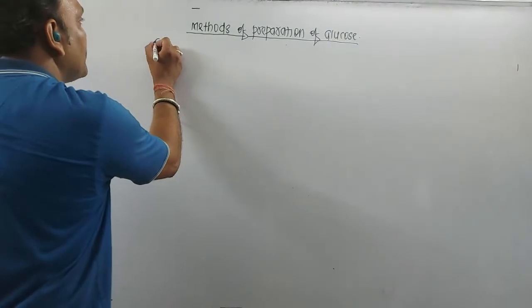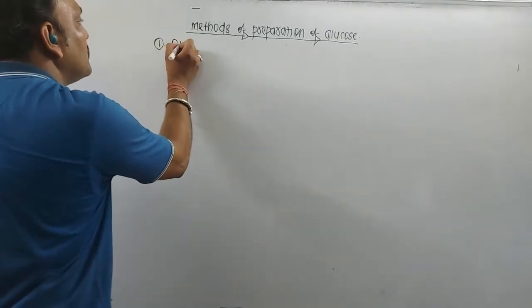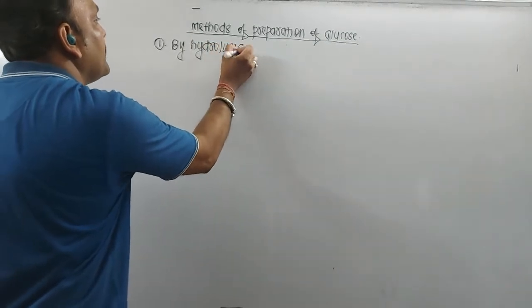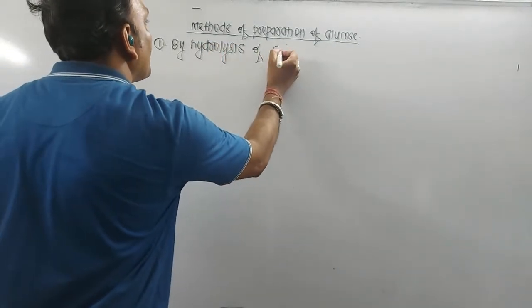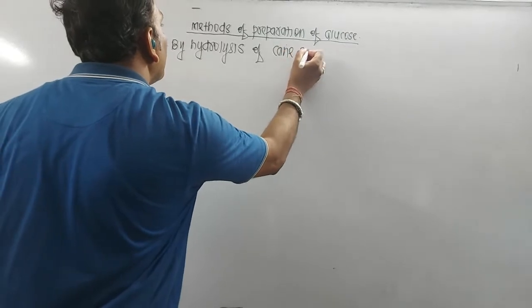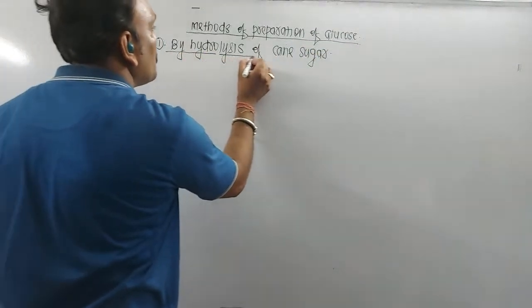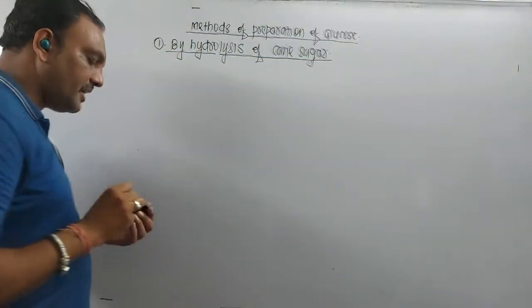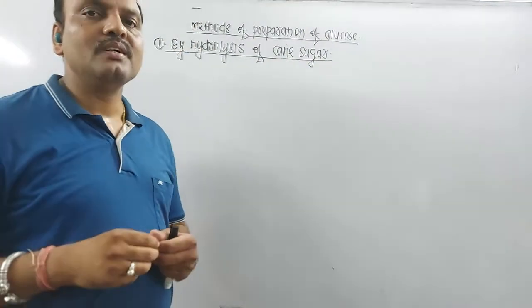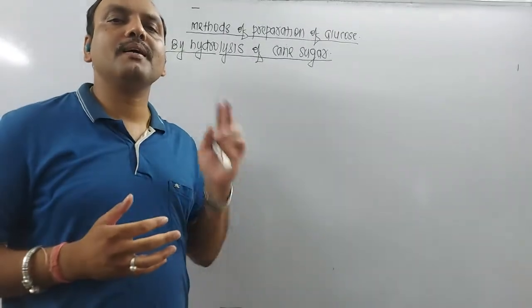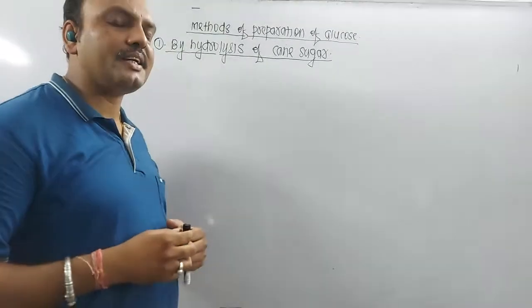So very first method to prepare glucose is by hydrolysis of cane sugar, that is sucrose. Now remember, cane sugar or sucrose is a disaccharide. Thus upon hydrolysis, sucrose is capable of giving two molecules of monosaccharides.